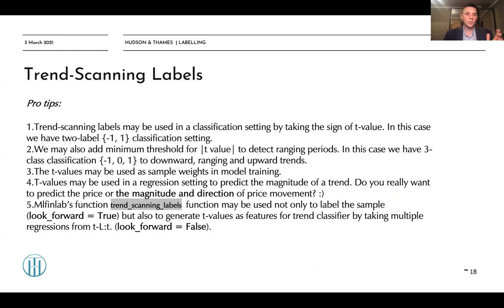We may also add a minimum threshold for the absolute value of t-value to detect ranging periods. When the price of the security oscillates around some value, usually t-values of your regression model will be quite low, meaning that we are in a ranging market.